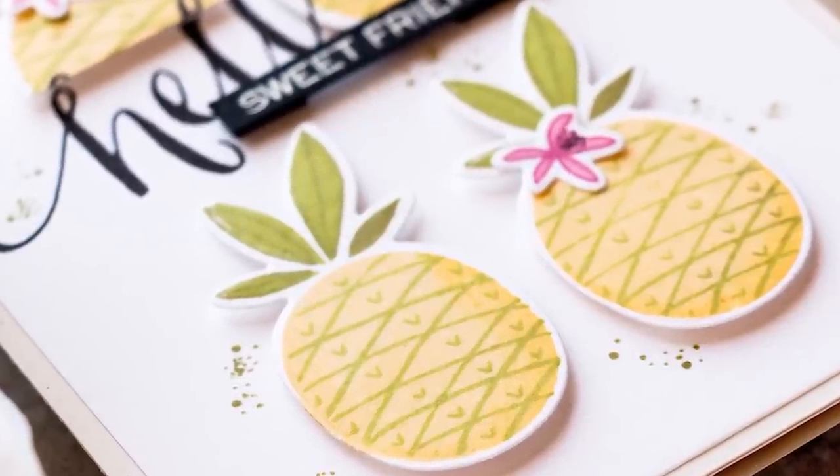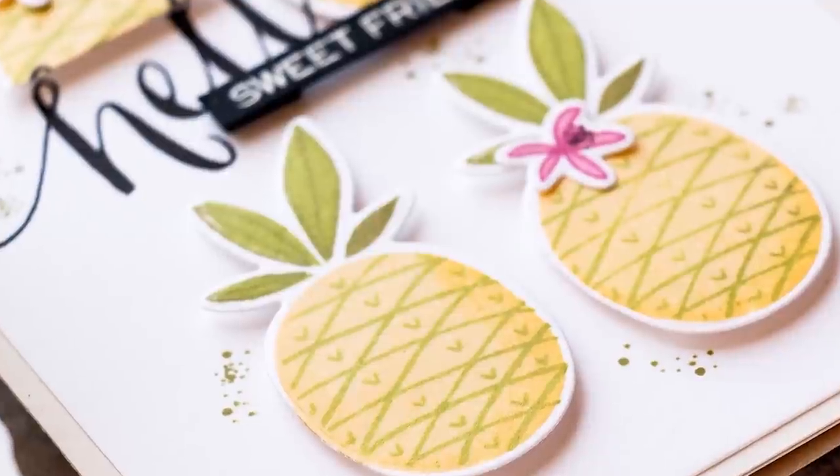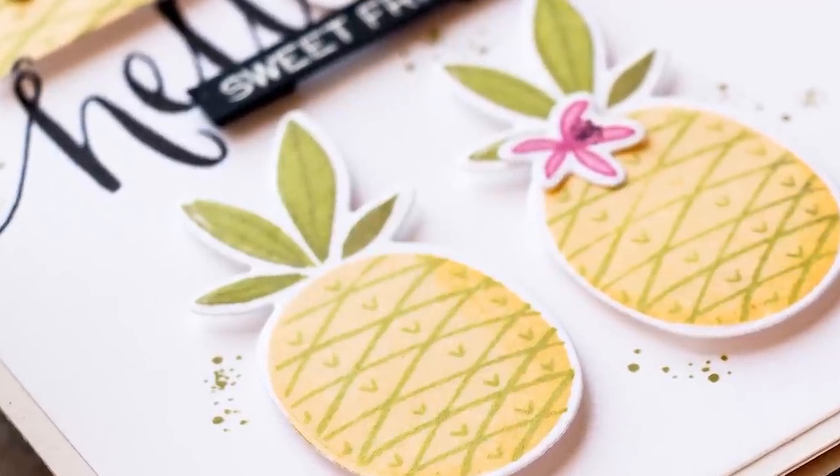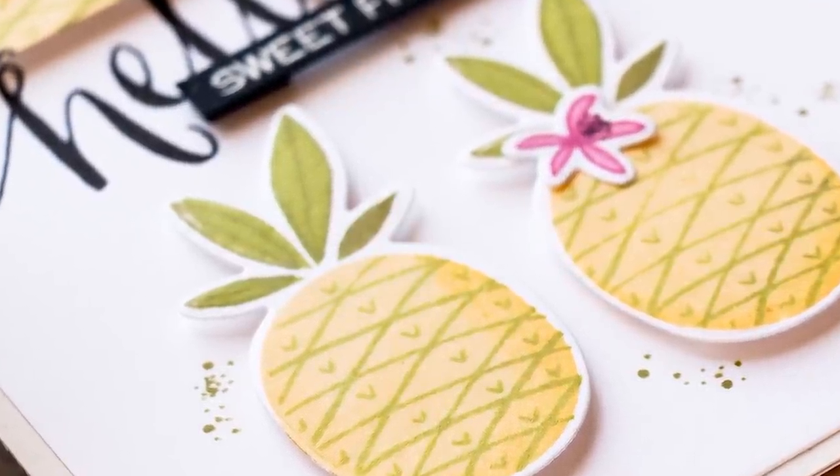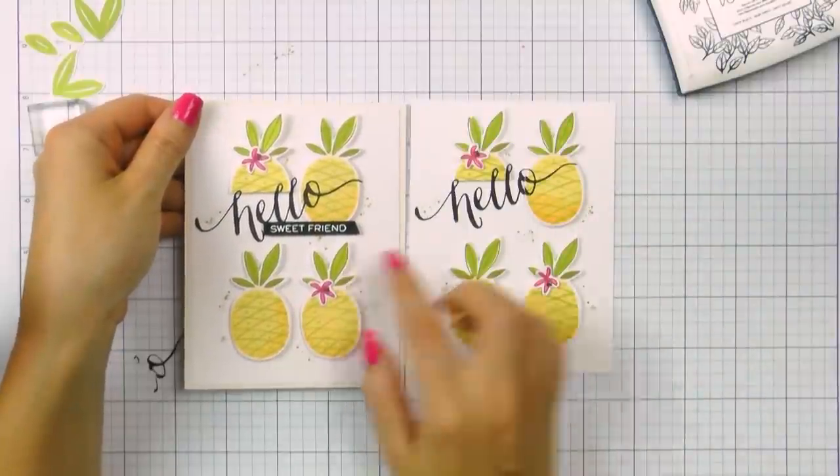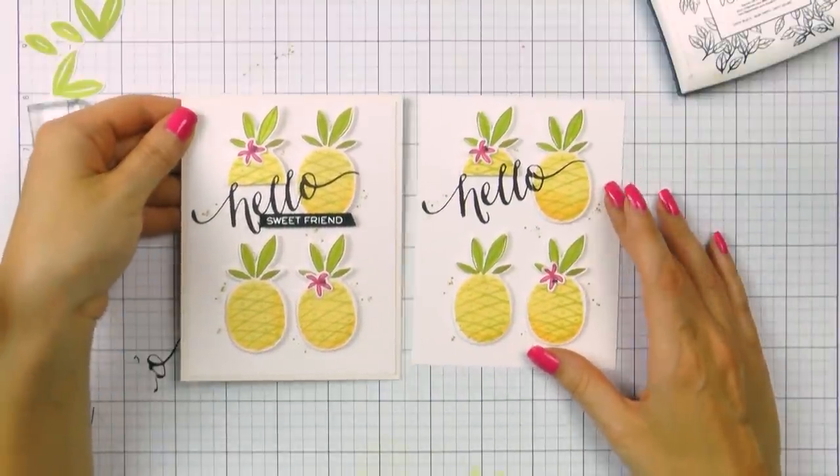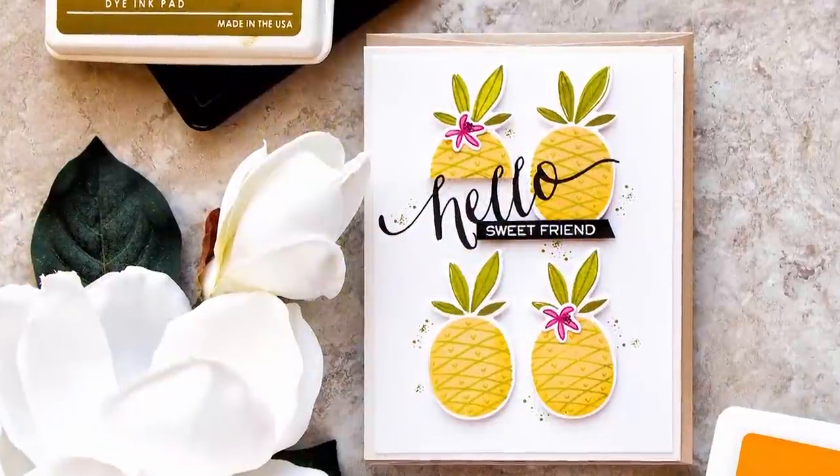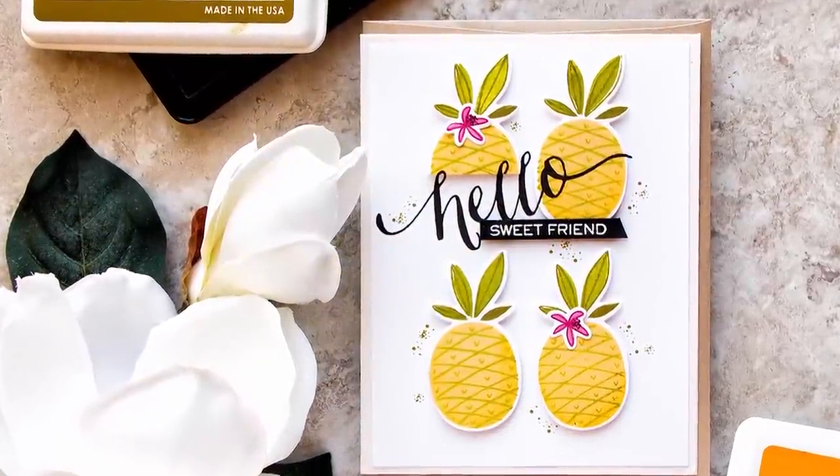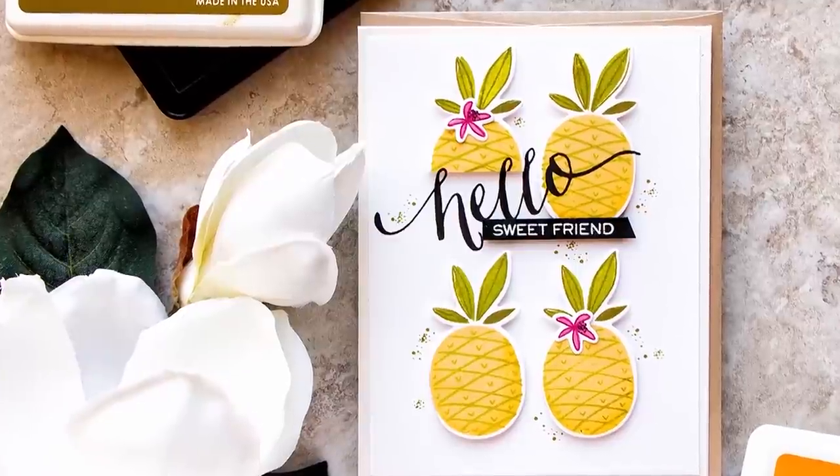If you are into more cleaner and simpler cards, I think this is a fantastic way to add ink splatter onto your projects. So here's the look at the other card that I made, the original project and all you have to do now to finish this one is to adhere your panel onto an A2 top folding card base and add heat emboss sentiment.